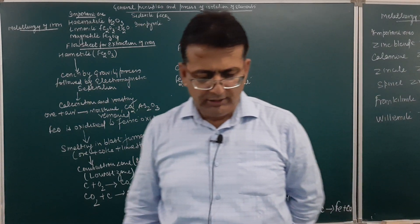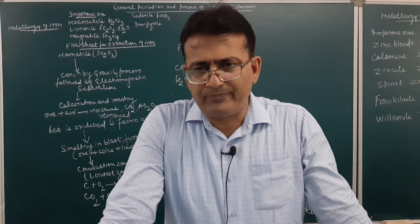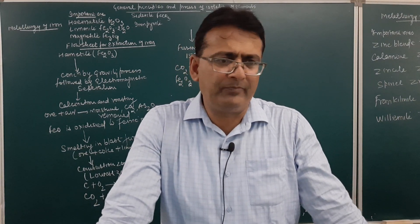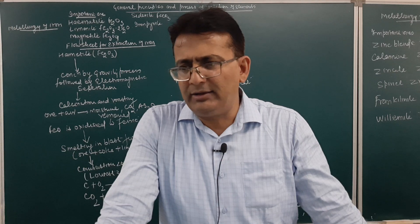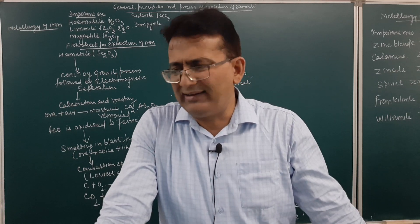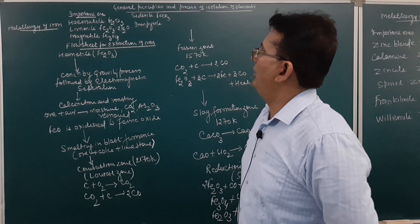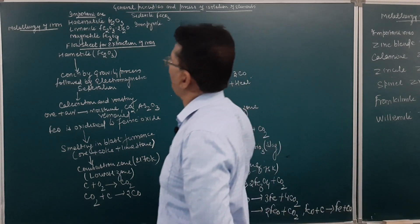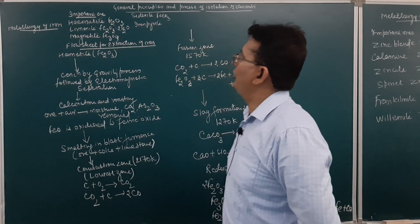Remember, students, in this reduced syllabus you have to study four metallurgical extractions: the metallurgy of iron, zinc, copper, and silver. In this video, we are starting with the discussion of metallurgy of iron.